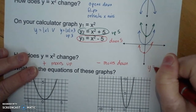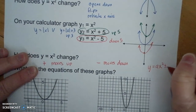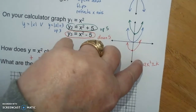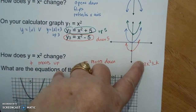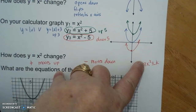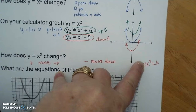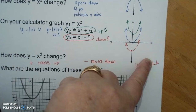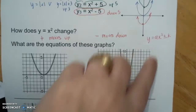So, y equals ax squared plus or minus k: if there's a negative out in front, it flips or reflects. If a is greater than 1, it makes it narrower. If a is less than 1, it makes it wider. If it is adding a number at the back, it is moving it up. If it is subtracting, it is moving it down.